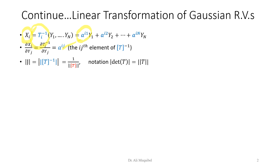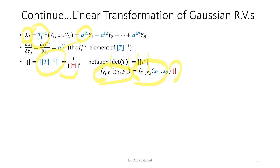We define the Jacobian as the absolute value of the determinant of the inverse transformation matrix. This can be written two ways: the first two lines represent the determinant, and the next two represent the absolute value. If the determinant turns out to be negative, we take the absolute value. The conclusion is that the output PDF equals the input PDF multiplied by the absolute value of the Jacobian.